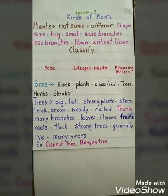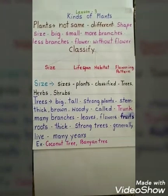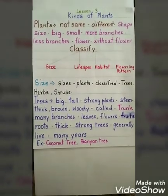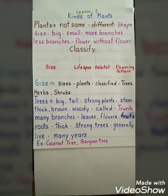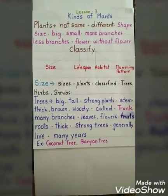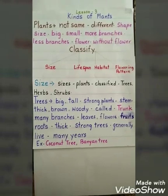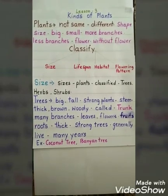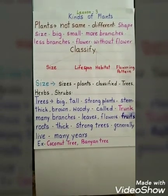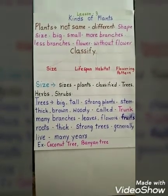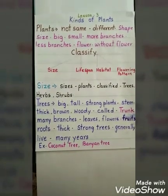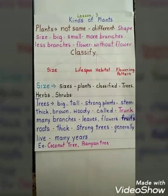Now we will move on to lesson number 3: kinds of plants. Children, 99% of you have visited a garden with your parents for a morning walk or to play. Have you seen the plants and trees? Some are big, some are small, some have flowers, some are without flowers. In this lesson, we are going to learn about the different types of plants.